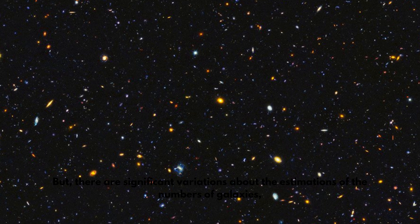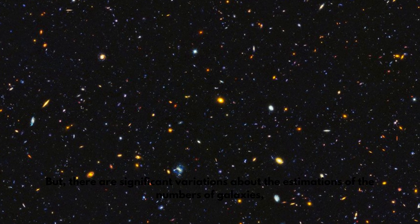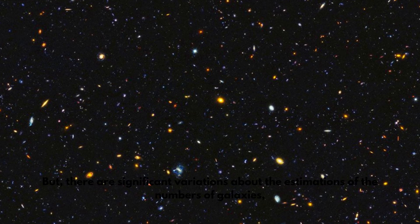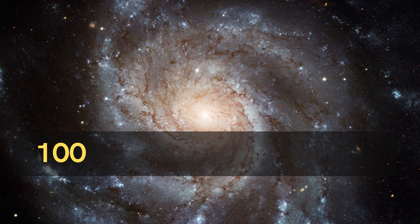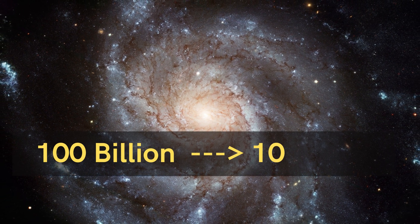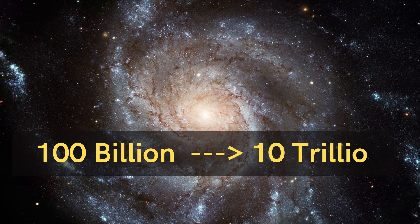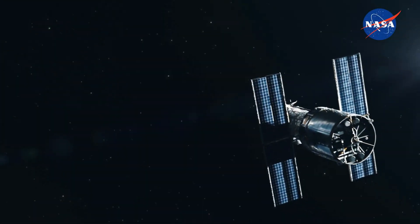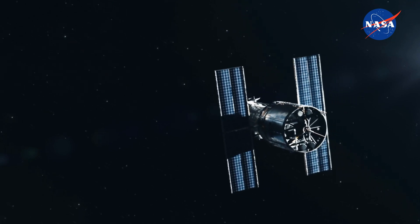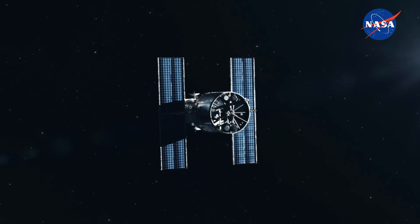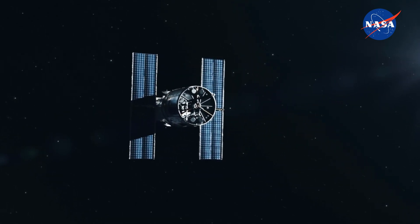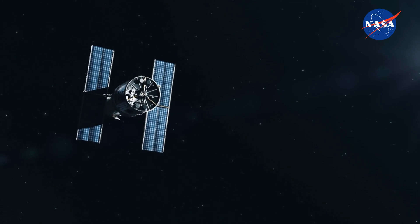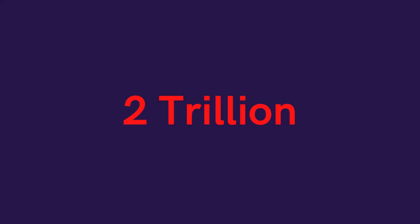There are significant variations in the estimations of the number of galaxies, ranging from as low as 100 billion to as high as 10 trillion. A 2016 study based on the images of NASA's Hubble telescope provided an estimate that the number of galaxies in the universe is 2 trillion. This number is generally used to estimate the number of stars.